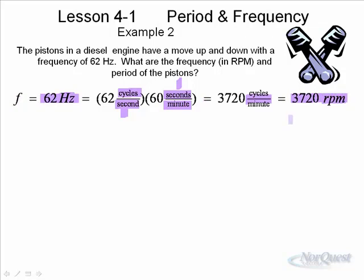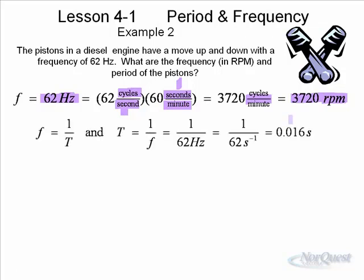So you can convert Hertz into RPMs by just multiplying by 60. Now, to find the period of this, of course, we know that the frequency is equal to 1 over T, or, in other words, the inverse of the period, and the period is equal to the inverse of the frequency. So if we go back to our 62 Hertz, 1 over 62 is equal to 1 over 62, and that gives you 0.016. So if you've got 62 Hertz, that means you have a very small period of only 0.016 seconds or 16,000ths of a second.